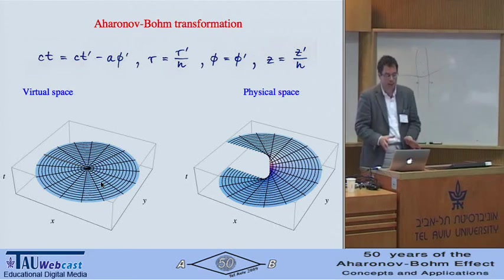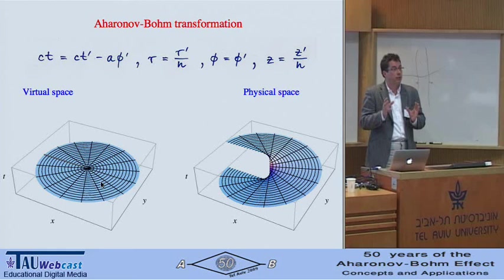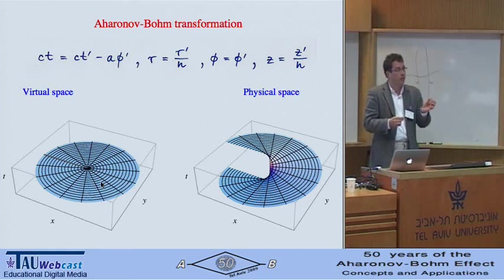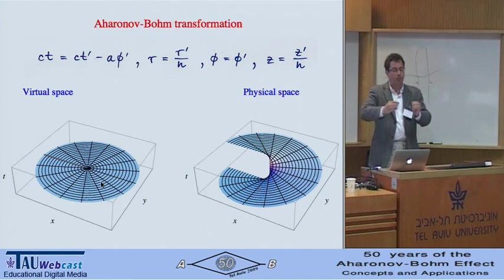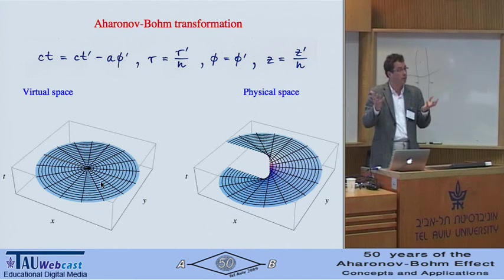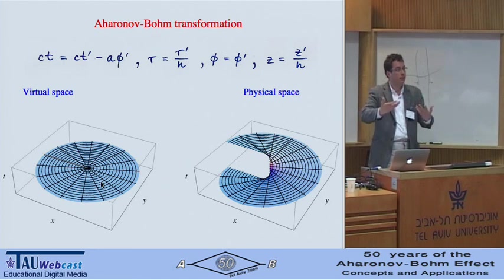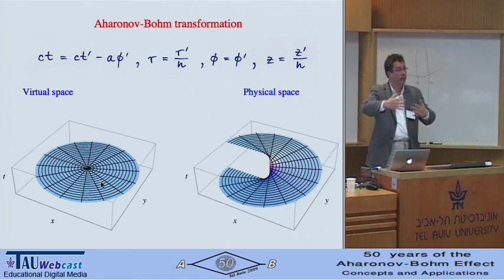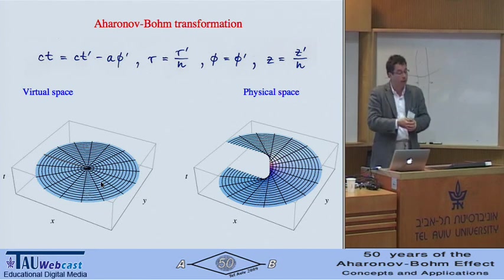And that creates, because that transformation just connects one of the spatial coordinates with time and doesn't change space, light would still propagate along straight lines in space — there would be no difference there. But time is changed, and therefore waves that propagate through space and time experience a phase shift: the Aharonov-Bohm phase shift in that analog.